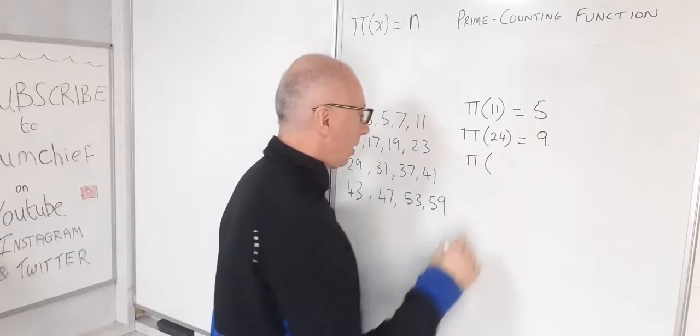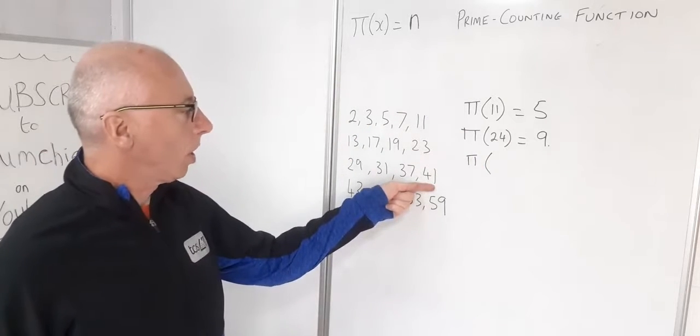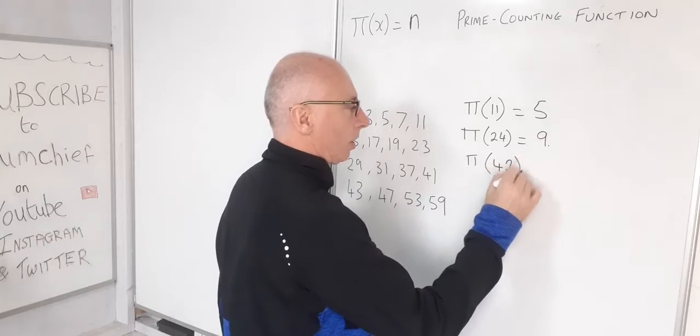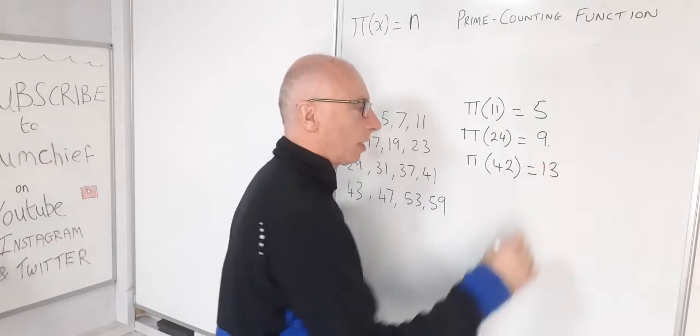Let's pick up to the next column, 41. So let's put 42 in there. 42 is going to give me 13 prime numbers.